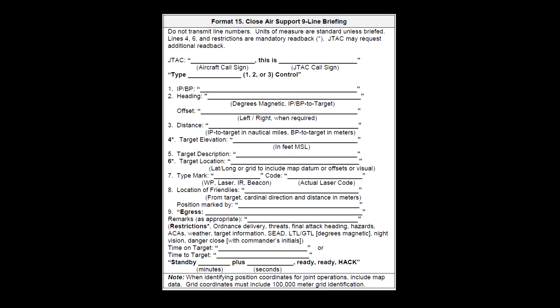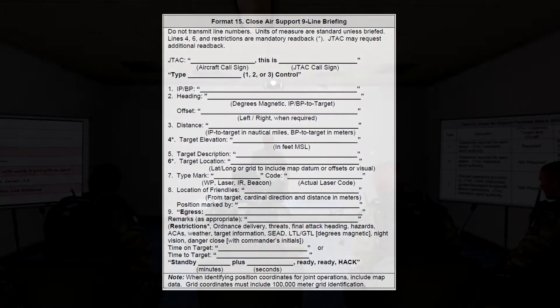After the 9th line, the JTAC can give remarks if they have any, such as ordnance requested, threats in the area, final attack heading, hazards like power lines, or a notification that it will be a danger close attack.